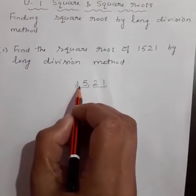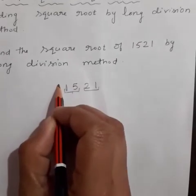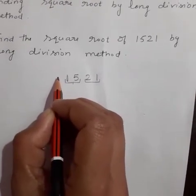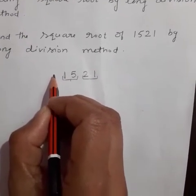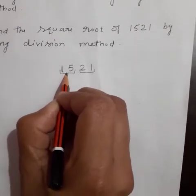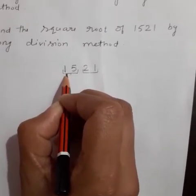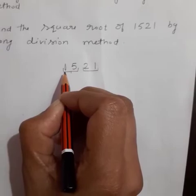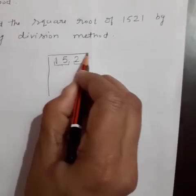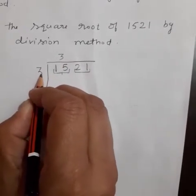Take the first period starting from the left, that is 15. Think of the largest number whose square is either equal to or just less than the first period. Our first period is 15, but 15 is not a perfect square. So the square just less than 15 is 9, and 9 is the square of 3. So 3 is our quotient as well as the divisor.